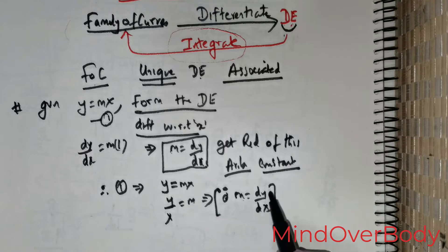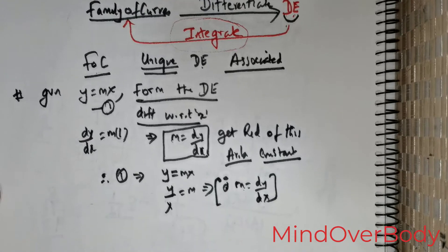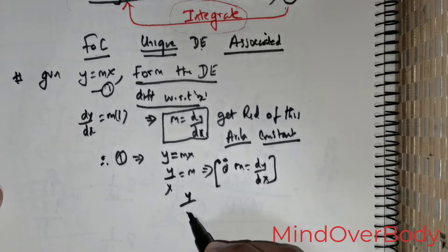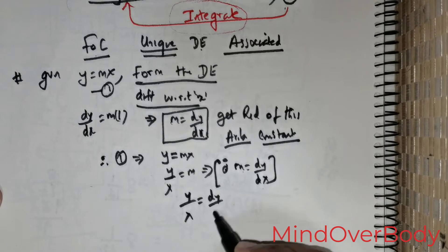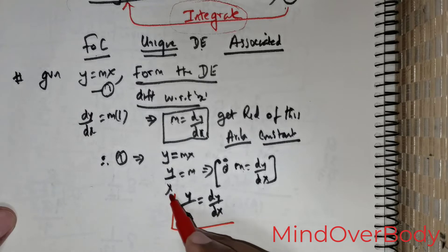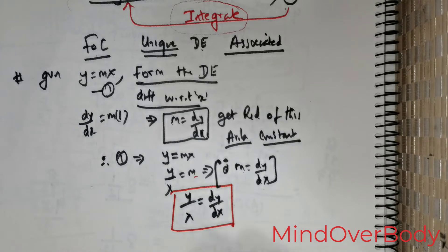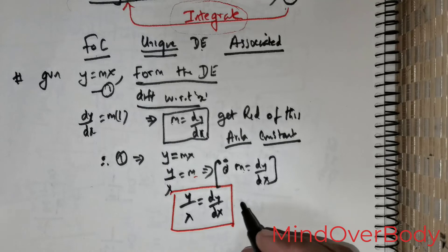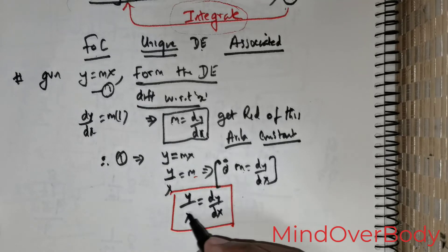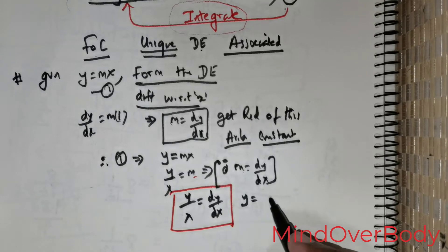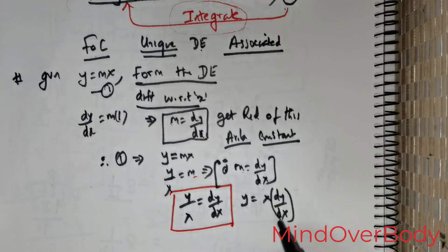Since m = dy/dx, this implies that y/x = dy/dx. This is the final solution. Clearly you can see that we have got rid of m. You can either stop here or, depending upon your requirement, rearrange this. You can write it as y = x·(dy/dx).